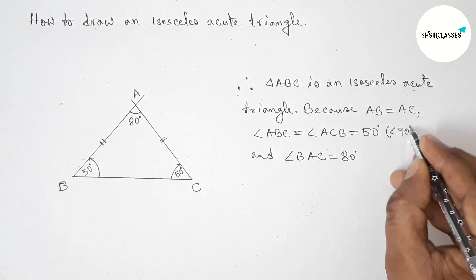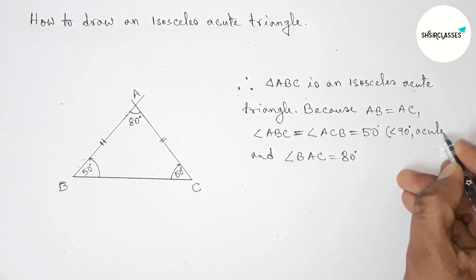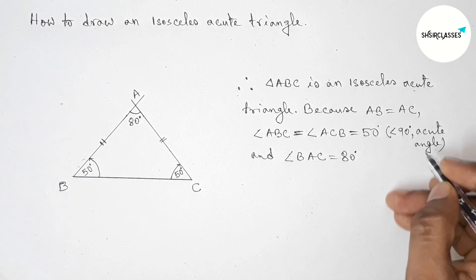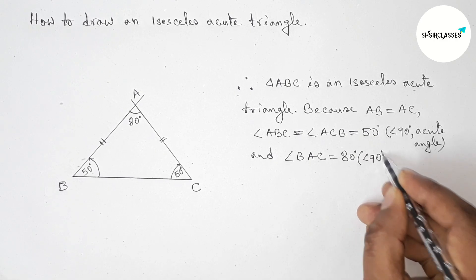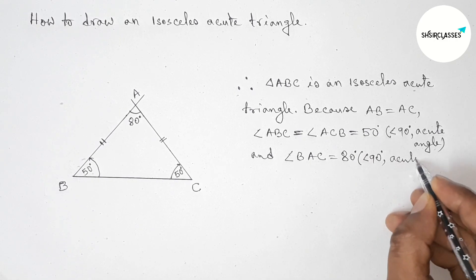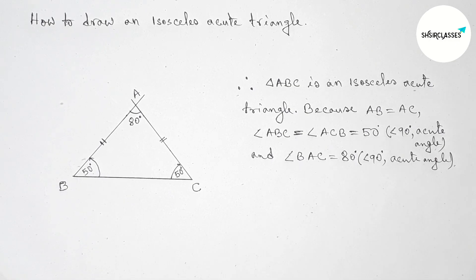Now this angle is less than 90 degrees, so we can say this is an acute angle. And here 80 degrees is also less than 90, so this is also an acute angle. Therefore, triangle ABC is an isosceles acute angle triangle. That's all, thanks for watching.